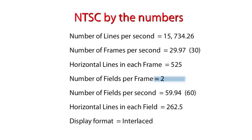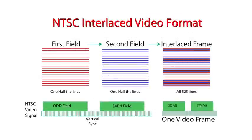Each field carries half the lines. The first field carries all the odd lines and the second field carries all the even lines. When combined, the two fields create an entire frame with all 525 lines. It's because of these two fields that NTSC video is interlaced. The two sets of lines in the two fields combine to make an entire frame.